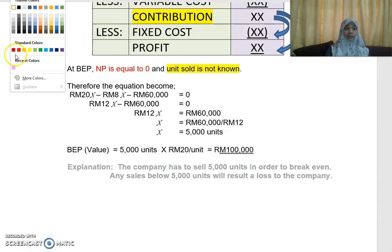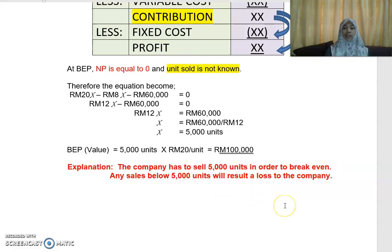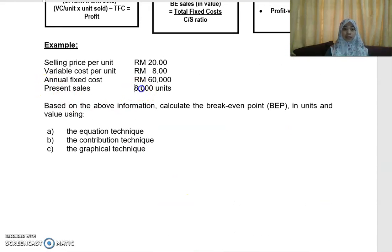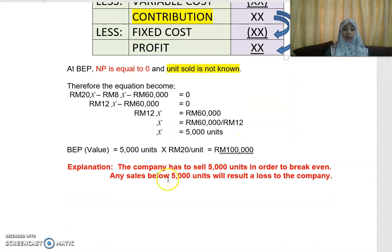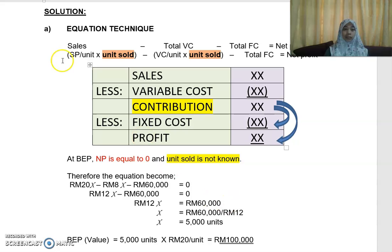The company has to sell 5,000 units in order to break even. Any sales below 5,000 units — for example, if you are selling 3,000 units — means you are making losses. Currently the company is producing and selling 8,000 units, which is above the break-even point, so you are making a profit. Anything below 5,000 units gives a loss; anything above 5,000 units gives a profit. That is how you work out break-even computation using the equation technique.